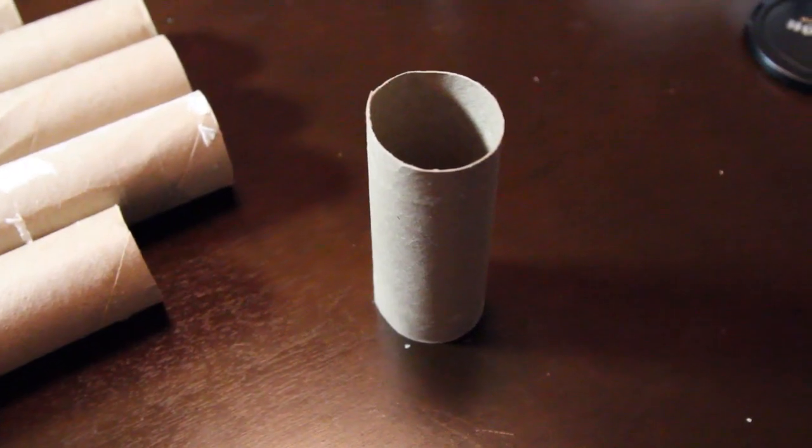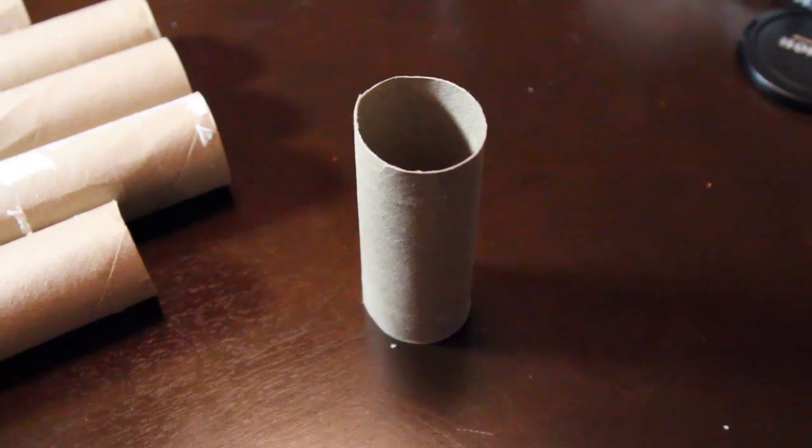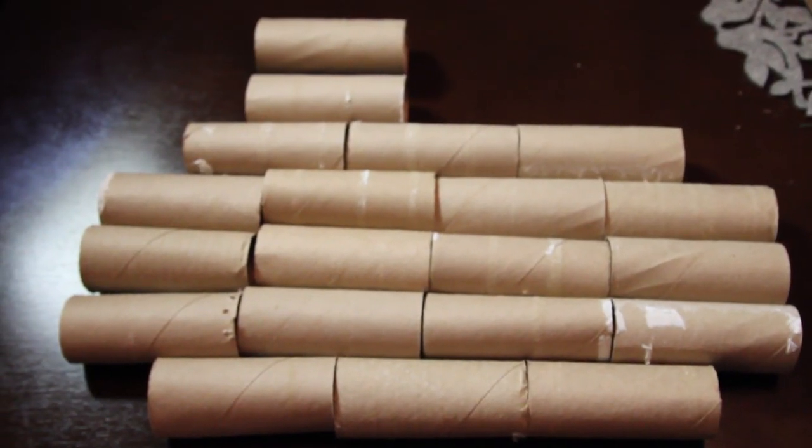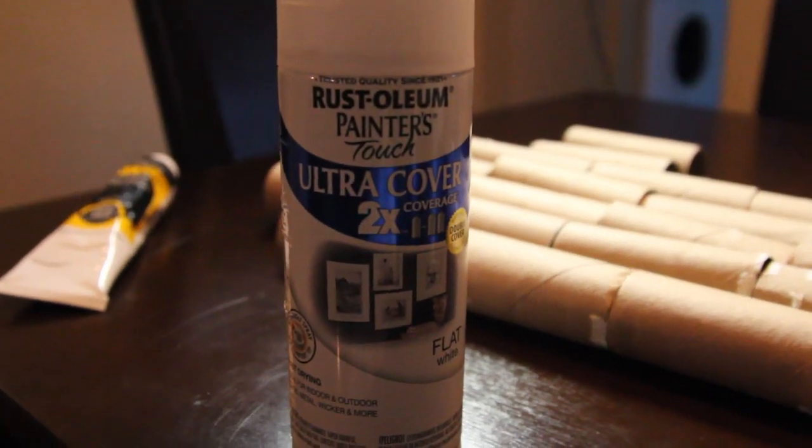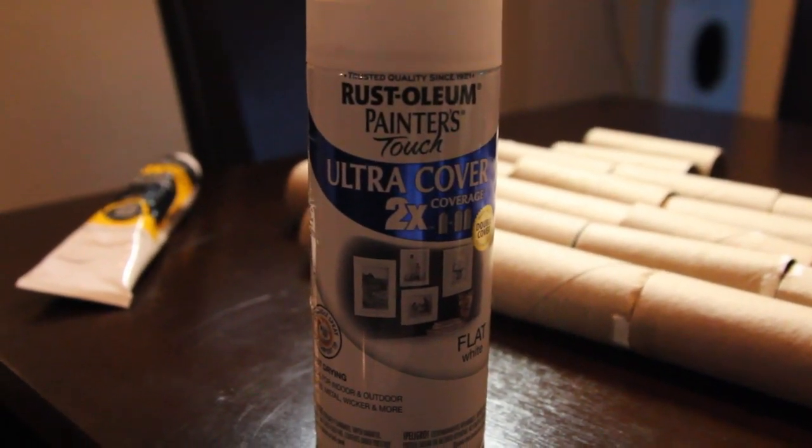So what you're going to need are some toilet paper rolls. For this project, 21 toilet paper rolls to be exact. And you're also going to need some white spray paint. White paint will do, but this is just faster.